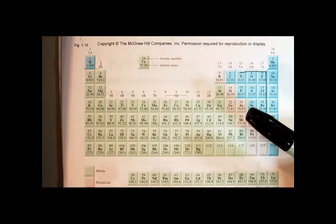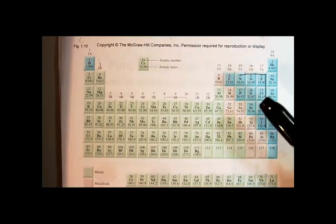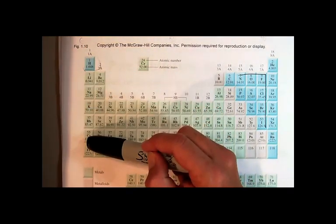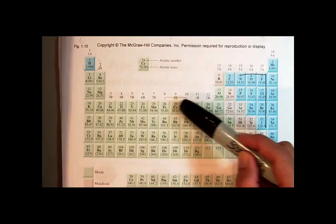What I want you to know is some common language that we use to describe the periodic table. For example, remember the vertical column is called a group and the horizontal row is called a period.